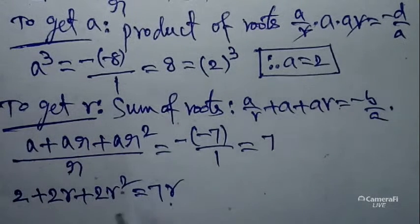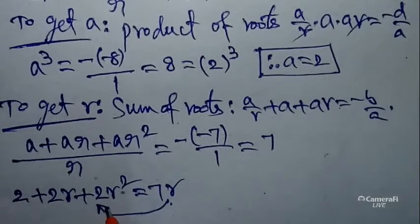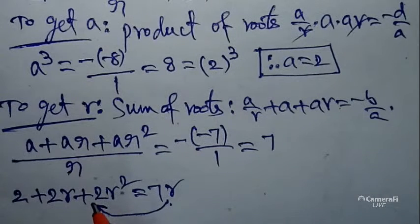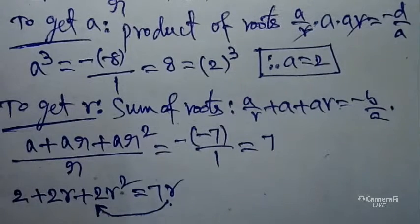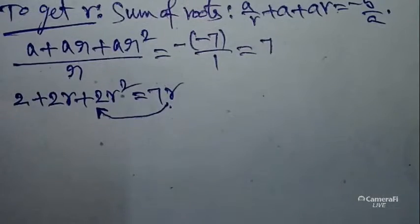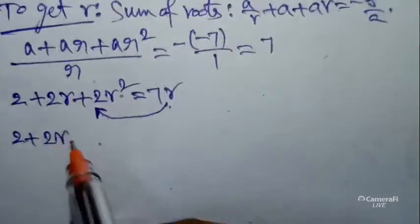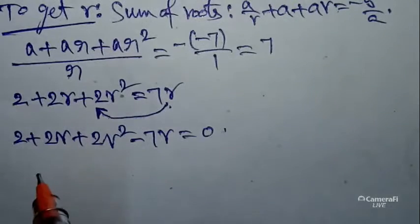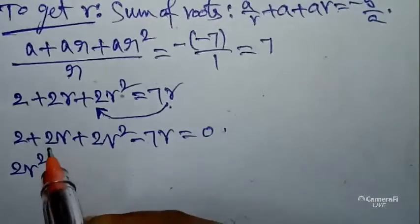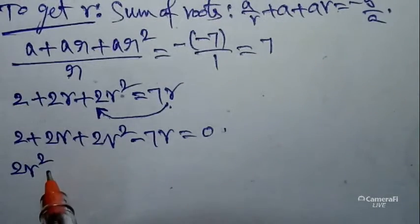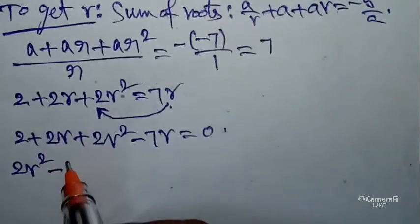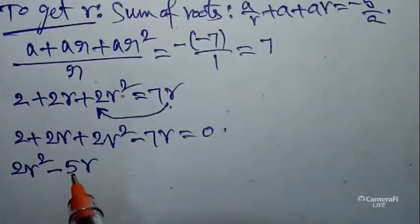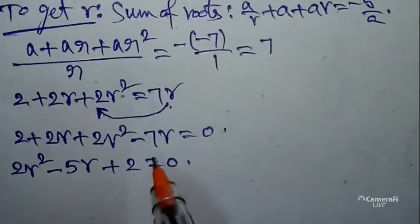Bringing 7r to the left side: 2r² + 2r - 7r + 2 = 0, which gives 2r² - 5r + 2 = 0. Now we can use factorization. The first term times the last term is 2r² × 2 = 4r², and the middle term is -5r. We need two terms that add to -5r and multiply to 4r².